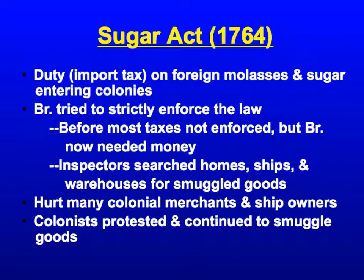One of those acts was the Sugar Act, which passed directly after the French and Indian War in 1764. It was an import duty — a tax on foreign molasses and sugar entering the colonies. The British tried to strictly enforce the law, something that had never really happened before because of salutary neglect. Now inspectors would actually search homes, ships, and warehouses for smuggled goods. Sometimes people would find cheaper French sugar, but now they were only supposed to buy British sugar. This hurt a lot of colonial merchants and ship owners, so colonists started protesting and continued to smuggle goods anyway, finding black market routes around the taxes.